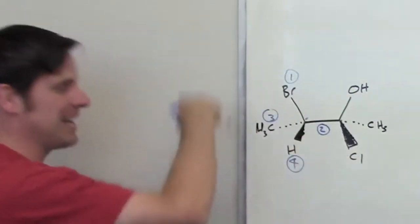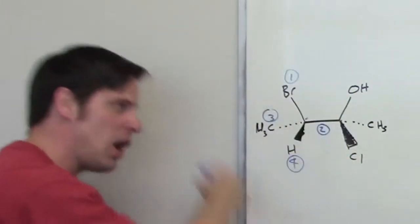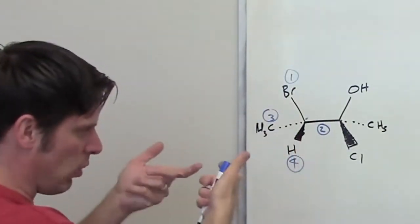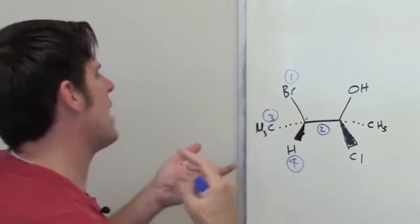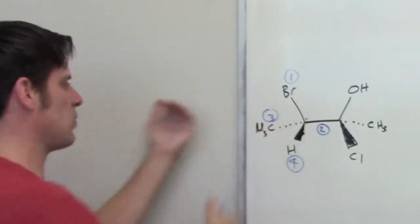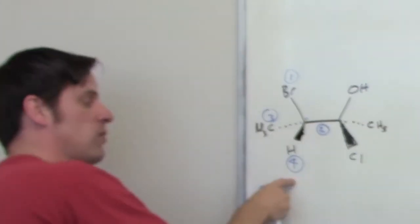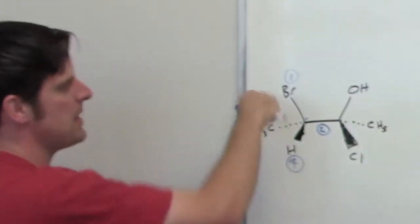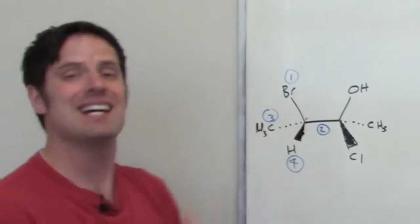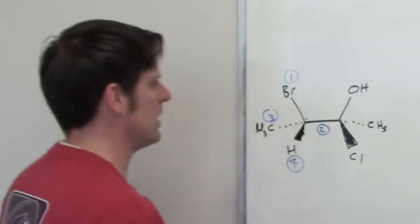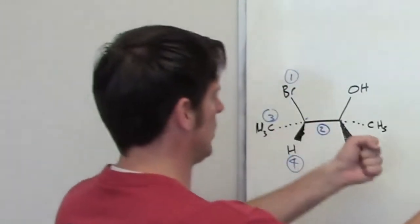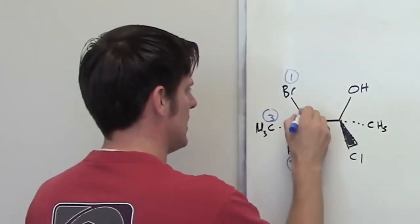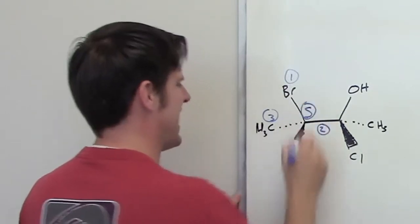Going from one to two to three, that looks clockwise. However, group number four is pointing three-dimensionally towards us. If I were on the other side staring at it so that group four were pointing away from me, then going from one to two to three would indeed be counterclockwise. And counterclockwise is S. So this stereocenter has an S configuration.